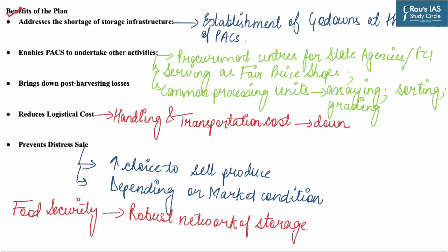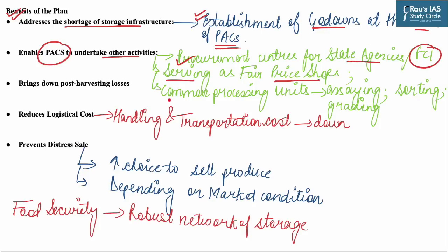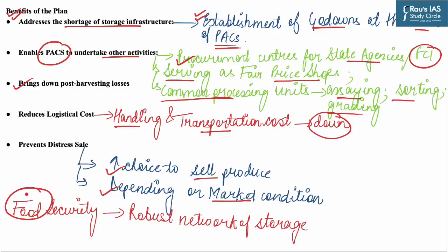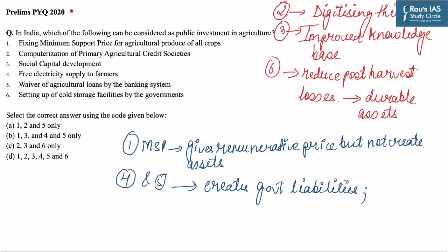The new plan will address the shortage of storage infrastructure by facilitating establishment of godowns at the level of PACS. It will enable PACS to undertake activities such as procurement centers for state agencies or the Food Corporation of India, serve as fair price shops, and function as common processing units for assaying, sorting, and grading. The plan will bring down post-harvest losses, and handling and transportation costs will also come down. Farmers will have increased choice to sell their produce and will not depend on distress selling, as choices will be based on market conditions. Hence, to ensure food security of the billion-plus population, a robust network of storage is required.